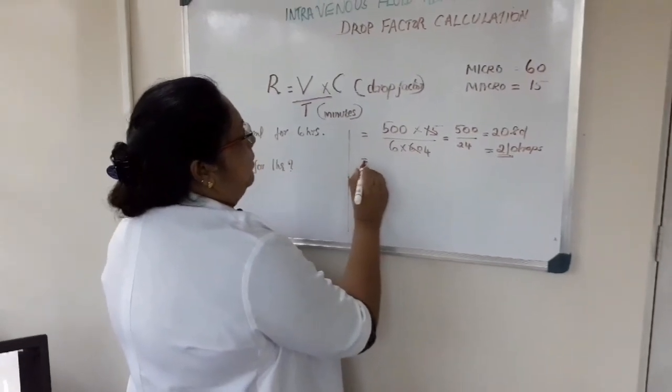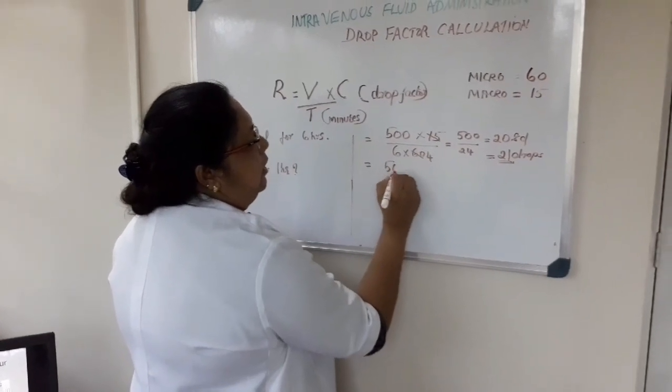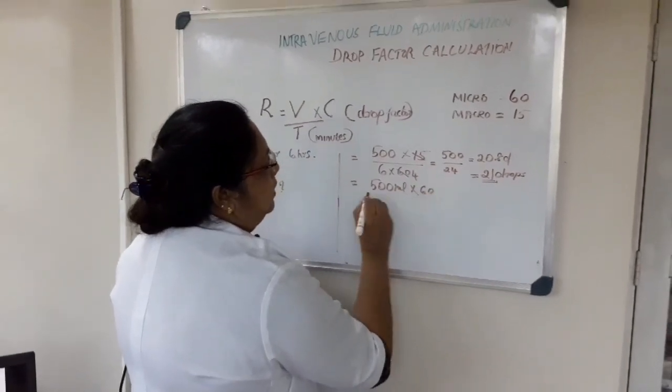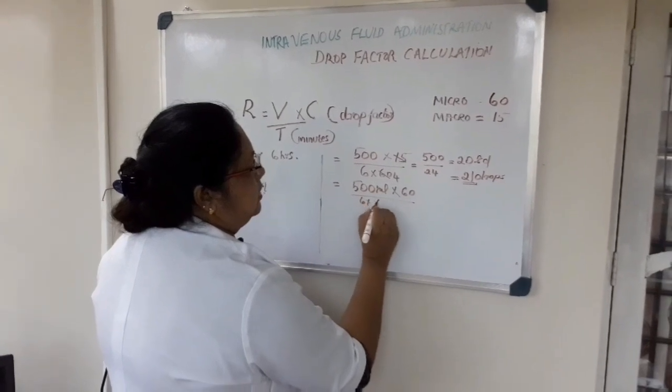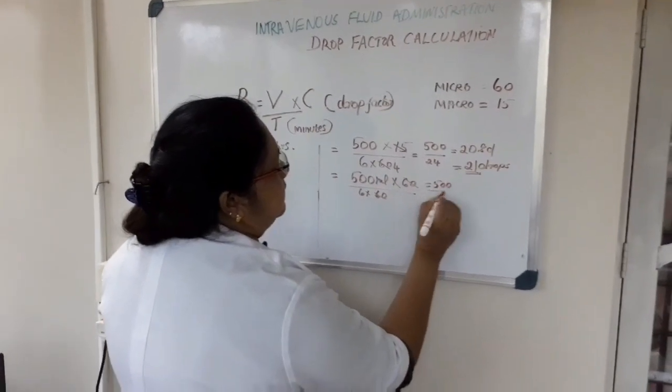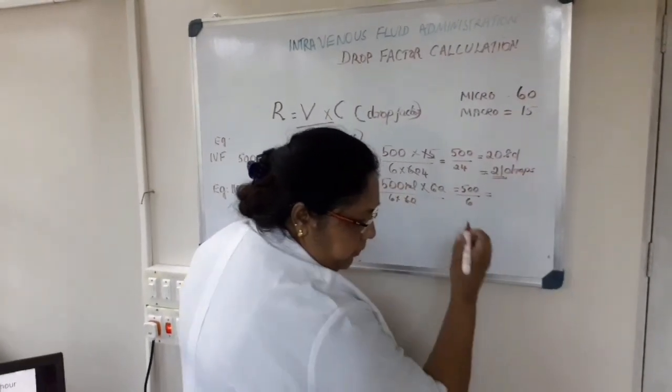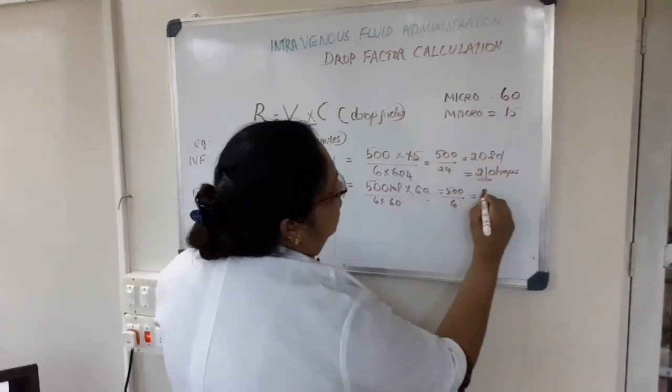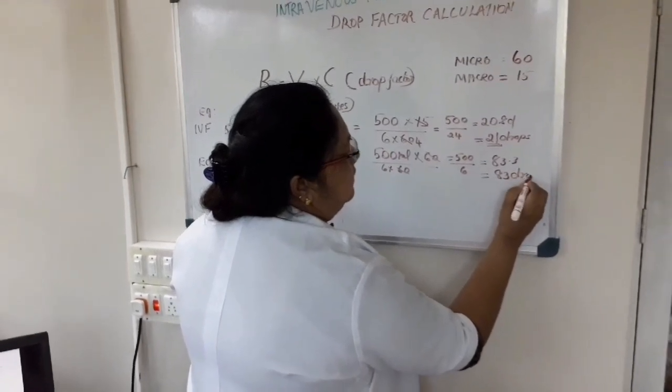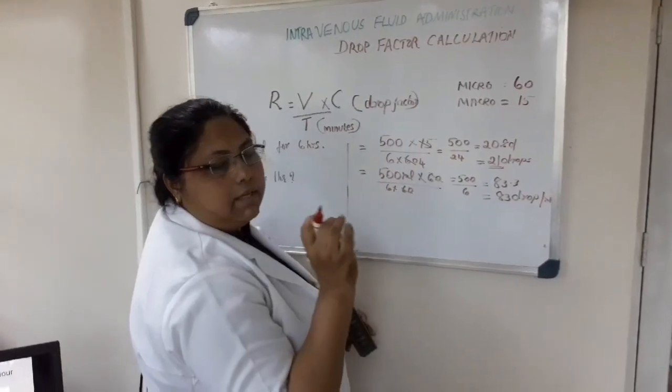Now we will move to another example. If the same amount of fluid is giving through the micro set where 60 drops are there, you have to again do the calculation. 500 ml, the drop factor is 60, the time is again 6 into 60. You can cut off 60 and it is 500 divided by 6. The drops will be more. It is 83.3, you can give as 83 drops per minute.